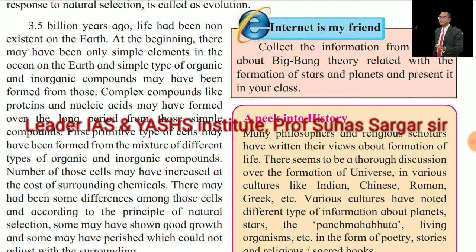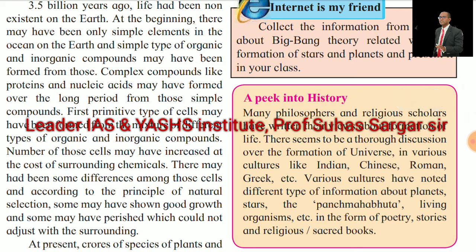At the beginning, there may have been only simple elements in the ocean on earth, and simple types of organic and inorganic compounds may have formed from those. Complex compounds like proteins and nucleic acids may have formed over a long period. Primitive types of cells may have formed from the mixture of different organic and inorganic compounds. The number of those cells may have increased at the cost of surrounding chemicals, and as per the principle of natural selection, some showed good growth while others perished.